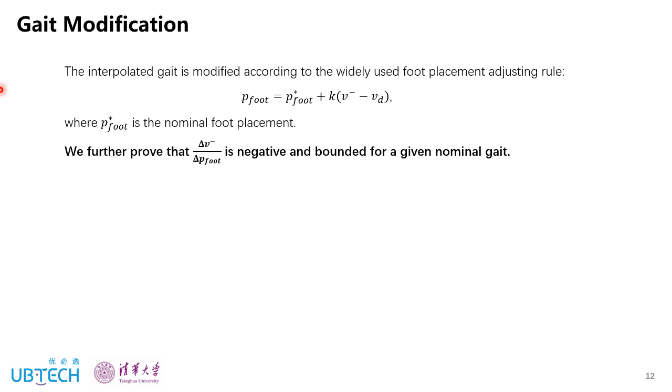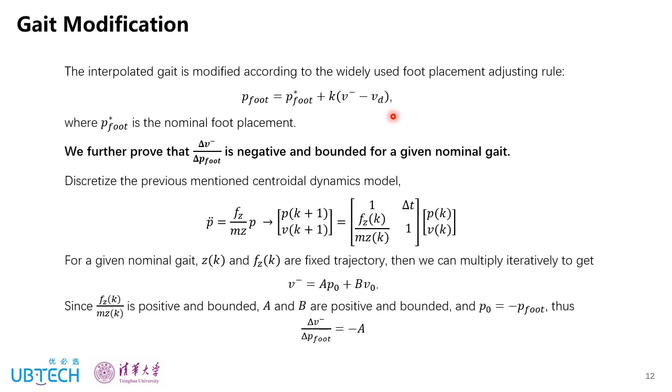The last step is gate modification. So we further modify the interpolated gate according to the widely used foot placement adjusting rule to regulate V-minus towards the desired value Vd. We further prove that the change of V-minus over the change of foot position is negative and bounded for a given nominal gate. This is the mathematical foundation for this heuristic rule. And this can be proved using the discretized centroidal dynamics model.